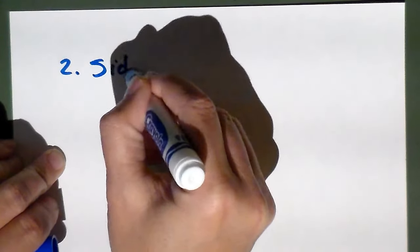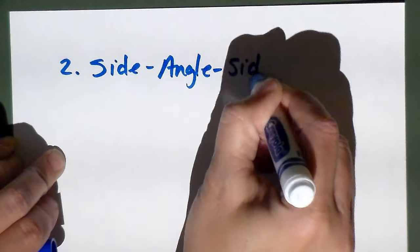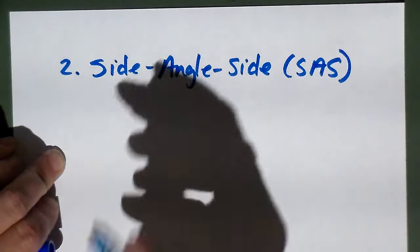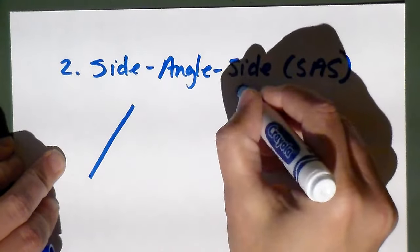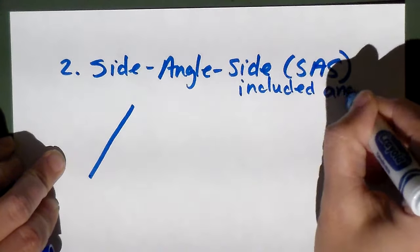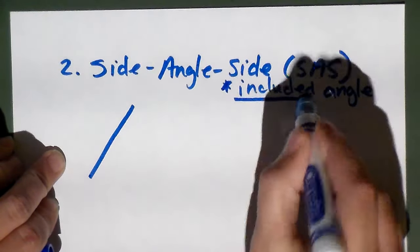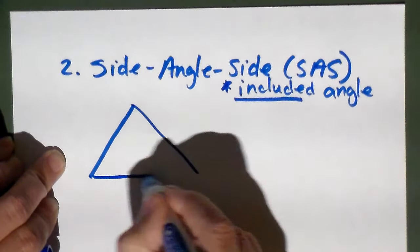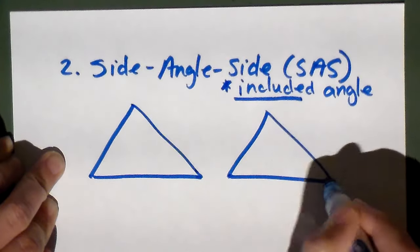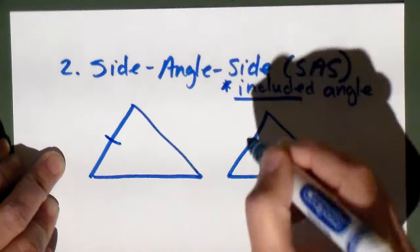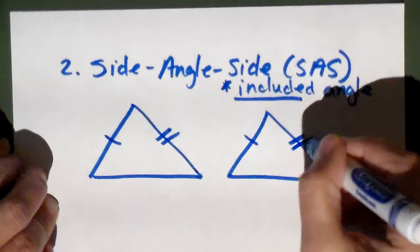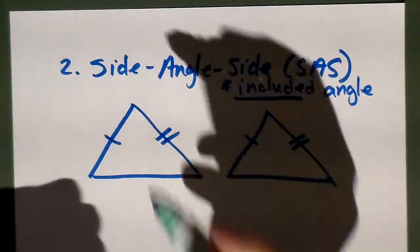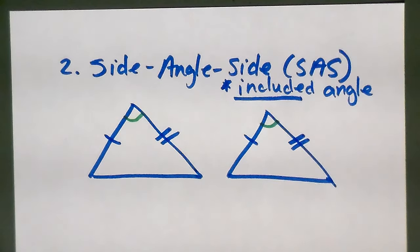Now for a quick review of the second one: side-angle-side, or SAS. Side-angle-side involves the included angle, meaning the angle has to be in between the two sides — it has to be touching both sides. If these two sides are the same and these two sides are the same, I can establish side-angle-side if I have an included angle.